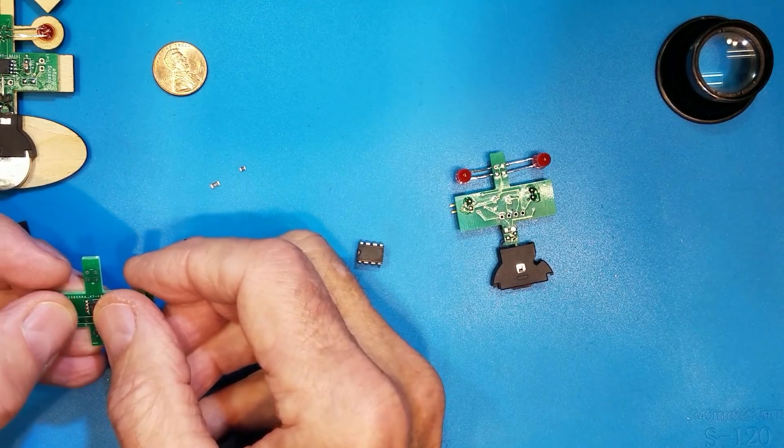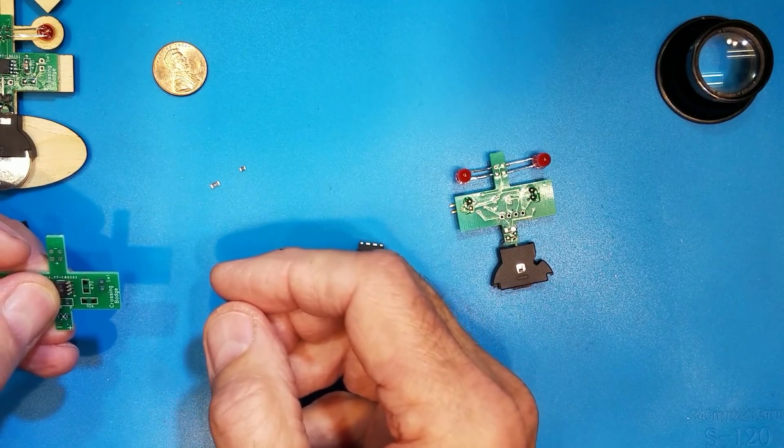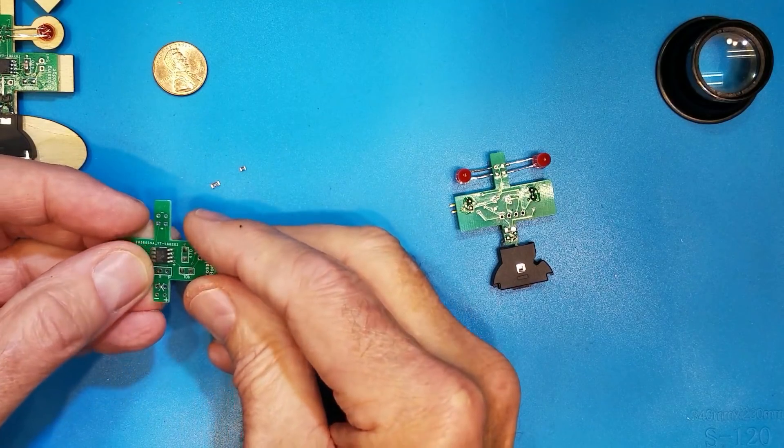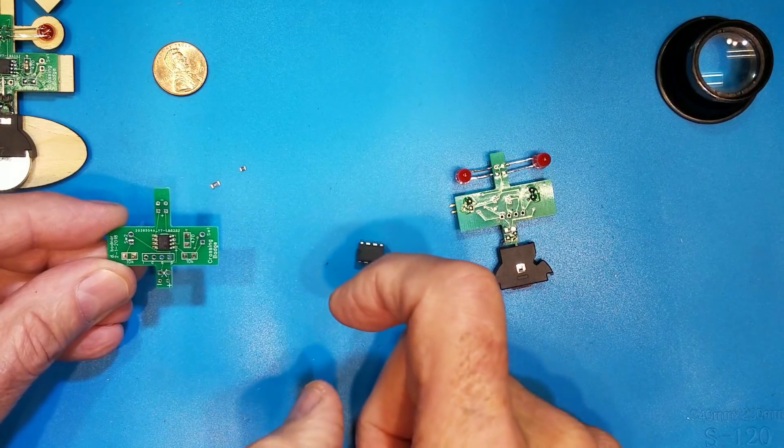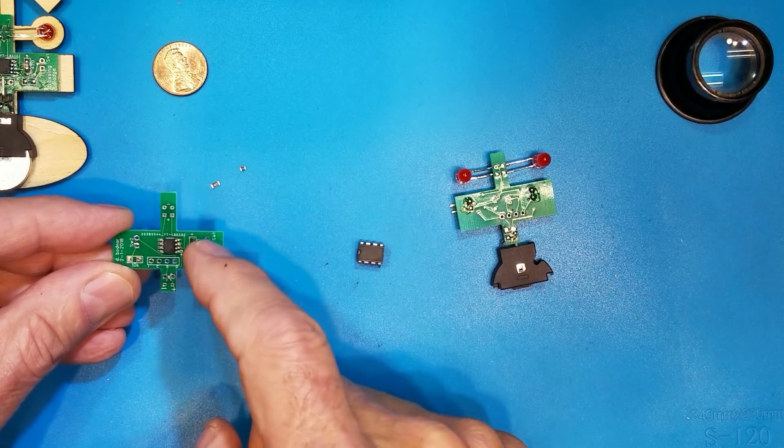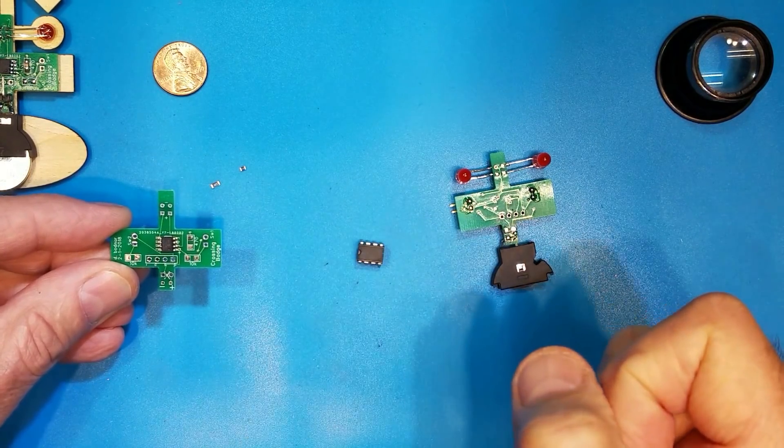Surface mount was really designed more for automation than for being done by hand. But what we want to do is to put that little chip right there. We've got to put one of the resistors here and one of the resistors over here. A couple of connections for the power, a couple of connections for the LEDs and we're done.